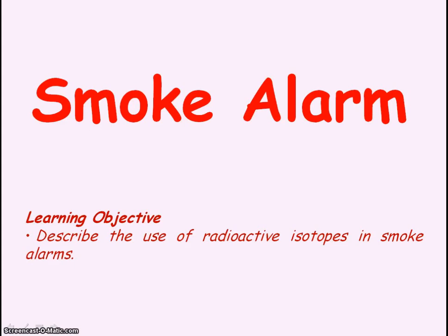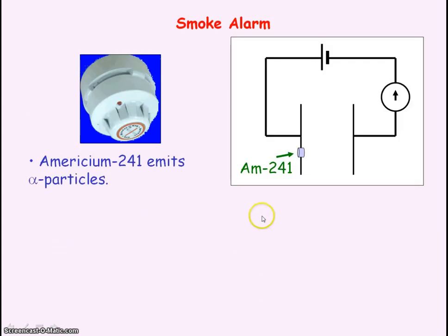We are going to be looking at the use of radioactive isotopes in smoke alarms. A smoke alarm consists of the radioisotope americium-241, which emits alpha particles.